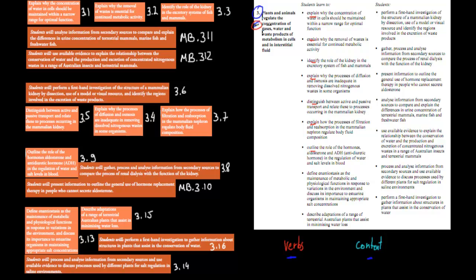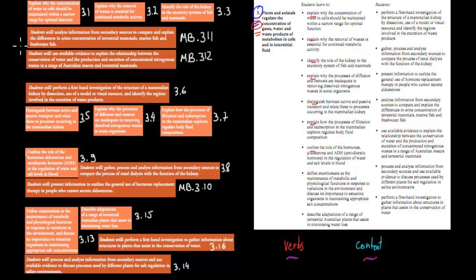In this video I'll cover the third context point of the Maintaining Balance module. There are 16 dot points, and I'll talk about the verbs of each dot point and connect the verbs to contents, basically letting you know what you need to know for each of those dot points. There are four sections, and you can jump to any of those sections or let me go through them one by one.